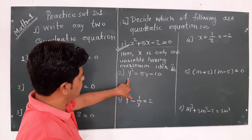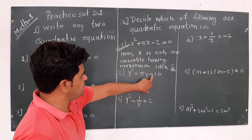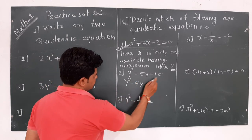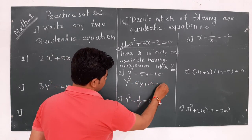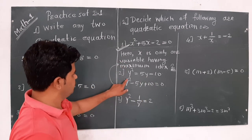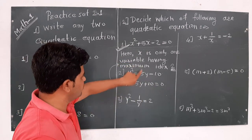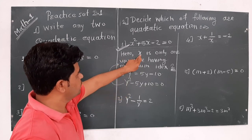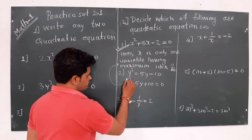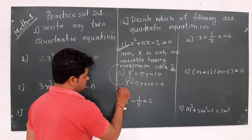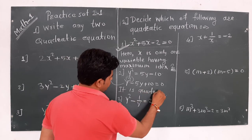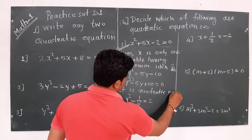Second: y² = 5y - 10. Rearranging, 5y comes to this side and 10 to this side, giving us standard form equal to 0. Same answer as before — only instead of x, we have y. Here, y is the only one variable having maximum index 2, so it is also a quadratic equation.